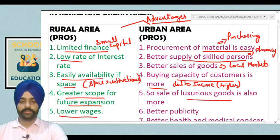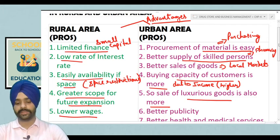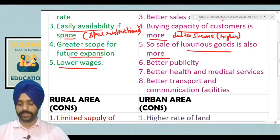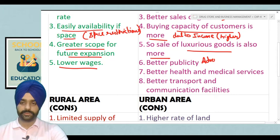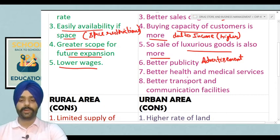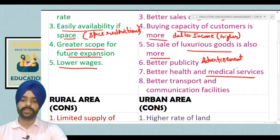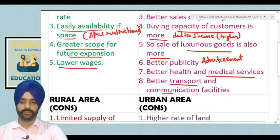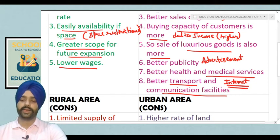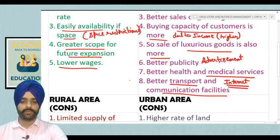Sale of luxury goods is also more — luxury items are easily sold in urban areas. Better publicity: in case of advertisement, urban areas provide a good source of publicity for products. Better health and medical services are available in urban areas, and since retail pharmacy stores have a direct relation with medical services, more medical services mean more business. Better transport and communication facilities — urban areas have more infrastructure for internet facilities, whereas in rural areas these facilities are not as advanced.